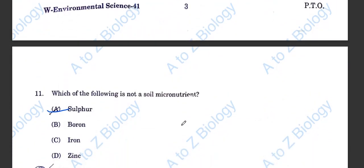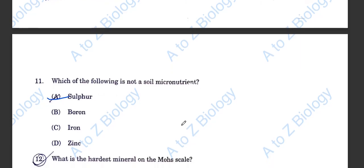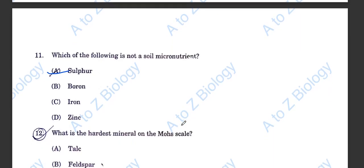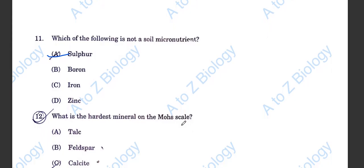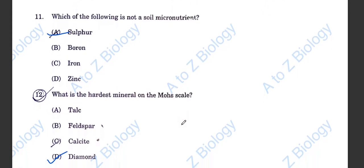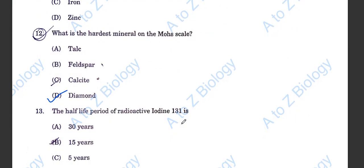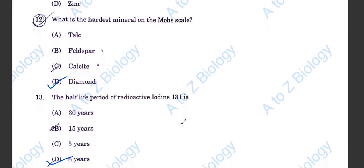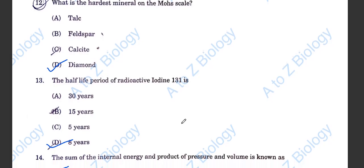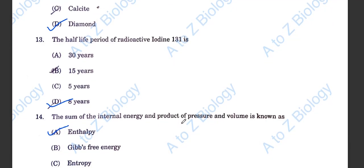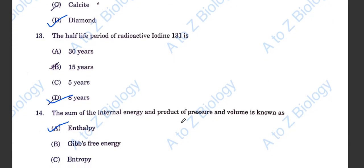Which of the following is not a soil micronutrient? Sulphur is not a soil micronutrient. What is the hardest mineral on the Mohs scale? Diamond. Question number 13. The half-life period of radioactive iodine is 8 years.